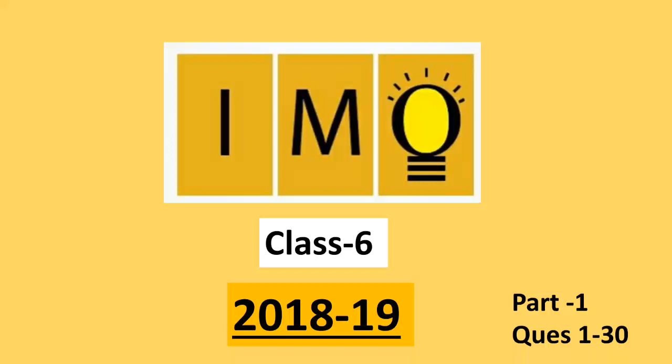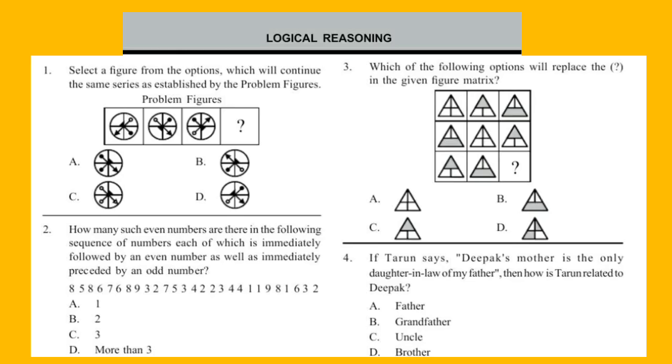Hello friends, welcome to our channel Olympiad Trainer. In this video, I'm going to show you the question paper of International Mathematics Olympiad exam, that is IMO, for Class 6, year 2018-19. This question paper is divided into two parts: Part 1 consists of questions 1 to 30, and Part 2 consists of questions 31 to 50. The answer key of these questions is given at the end of the video. Let's start with the first section, Logical Reasoning.